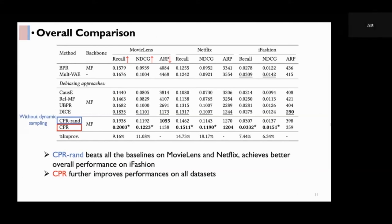From these results, we can see that CPR-RAND beats all the baselines on MovieLens and Netflix and achieves better overall performance on iFashion. And with the help of dynamic sampling, CPR further improves performances on all datasets.